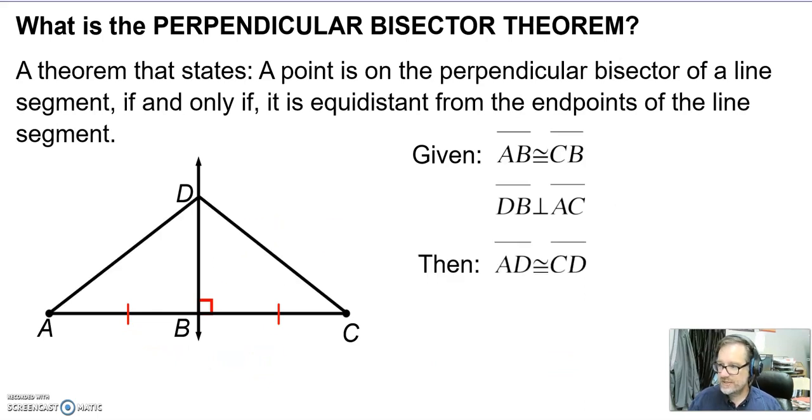If I give you a picture that looks like this, we're going to connect the endpoints of the segment, put them anywhere on this perpendicular bisector, anywhere on the line. We now know AD and CD are congruent to each other.